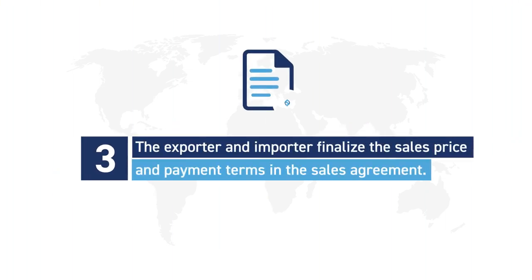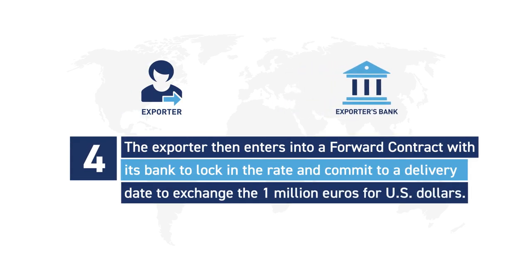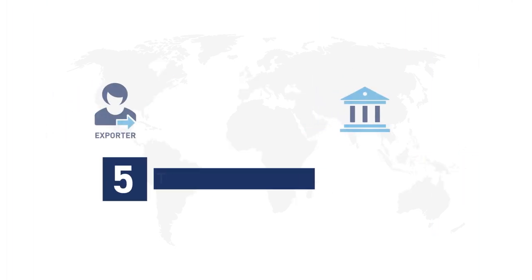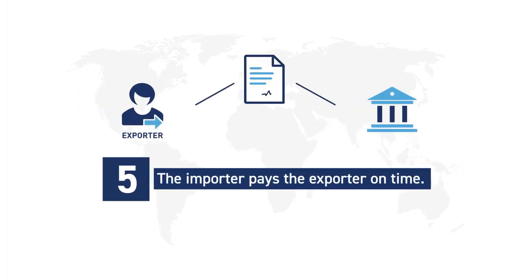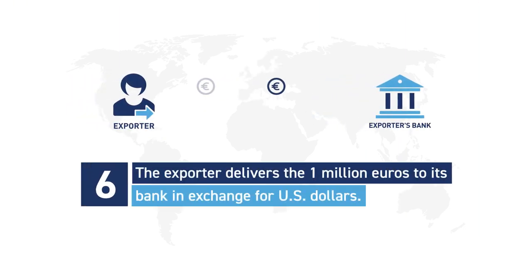Next, with a forward contract commitment from the bank, the exporter and importer finalize the sales price and payment terms in the sales agreement. The exporter then enters into a forward contract with its bank to lock in the rate and commit to a delivery date to exchange the 1 million euros for U.S. dollars. Finally, the importer pays the exporter on time. Following the forward contract terms on the delivery date, the exporter delivers the 1 million euros to its bank in exchange for U.S. dollars.